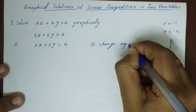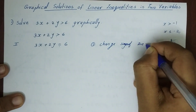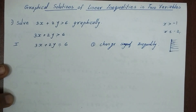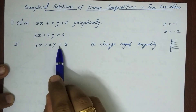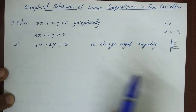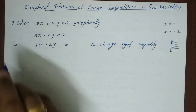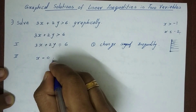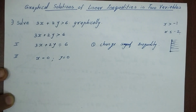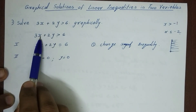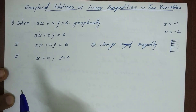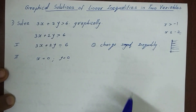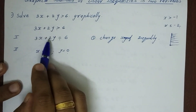The first step is to change the sign of the inequality — that is, replace the inequality sign with an equal sign. The second step: we will find x equal to 0 and y equal to 0. We have x and y as two variables.